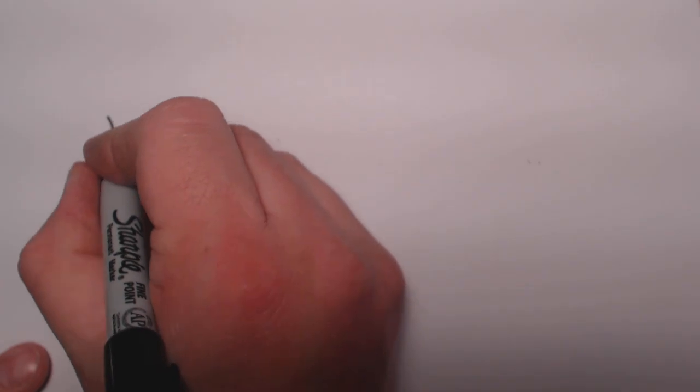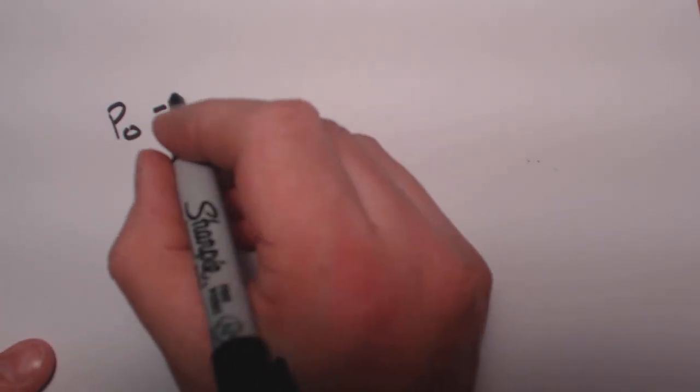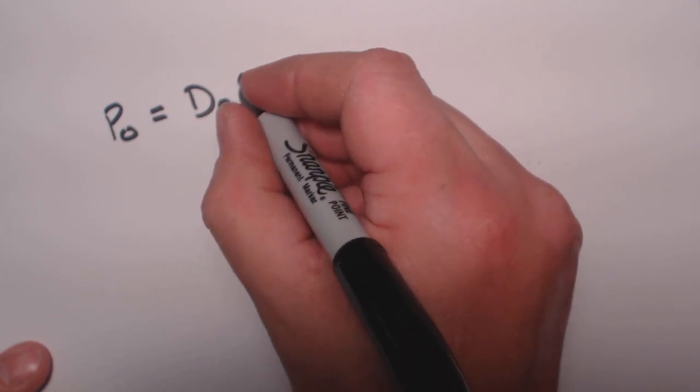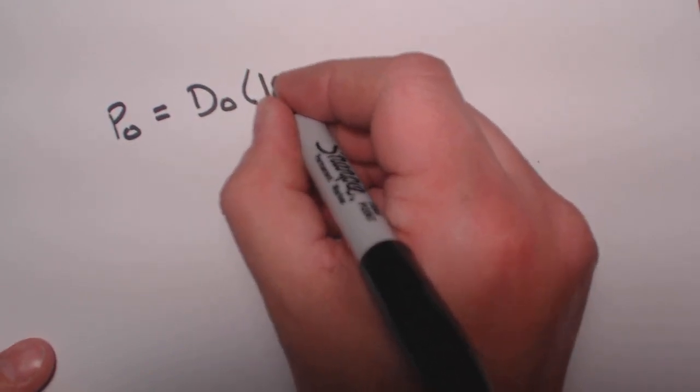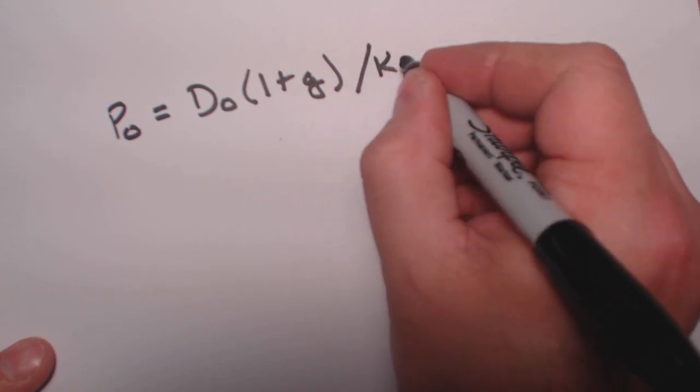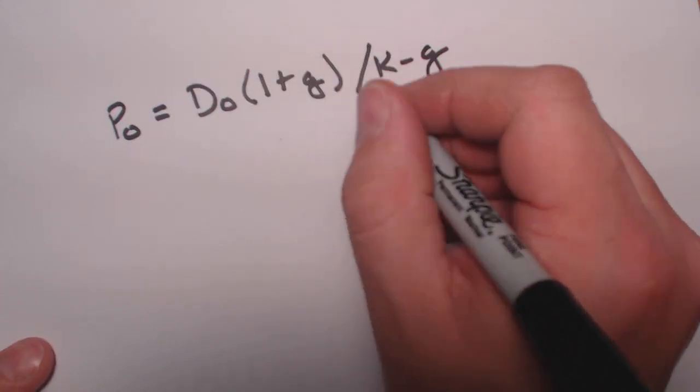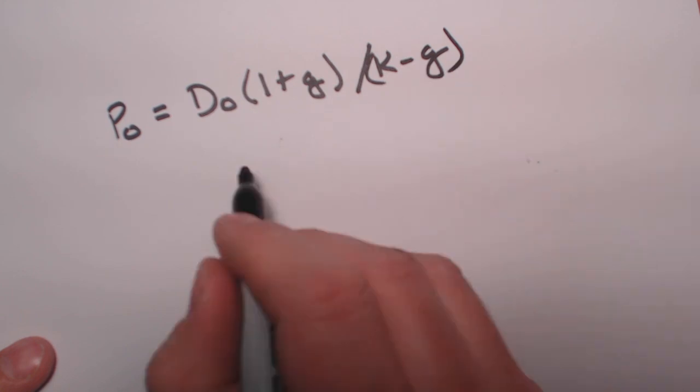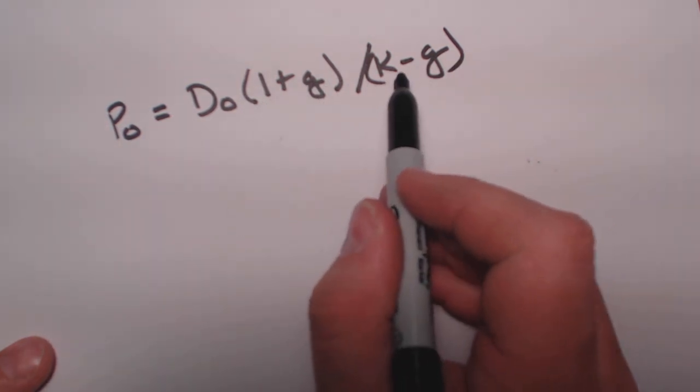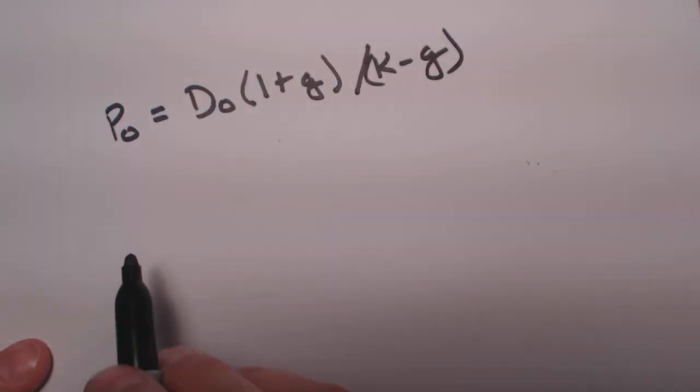So the problem looks like this. P0, that's the price, equals D0, which is dividend zero or the first year dividend, times 1 plus G, divided by K minus G. That's a small K. Now, G is growth, K is interest, D is dividend, and P is price.